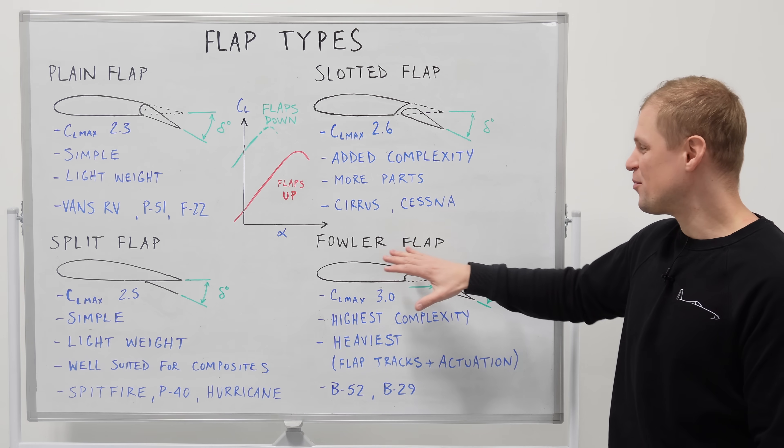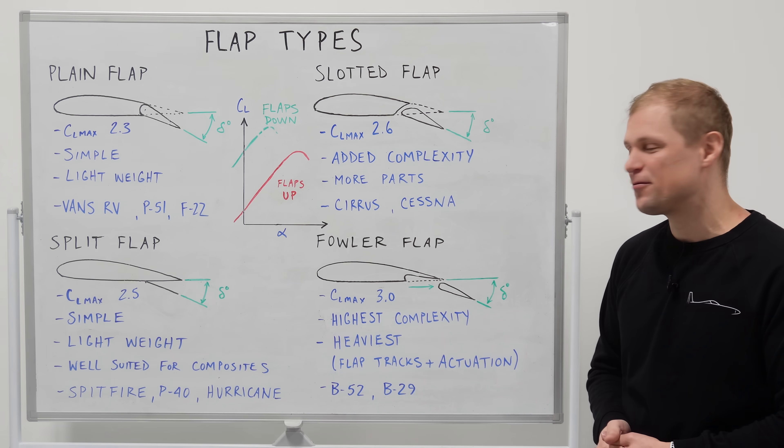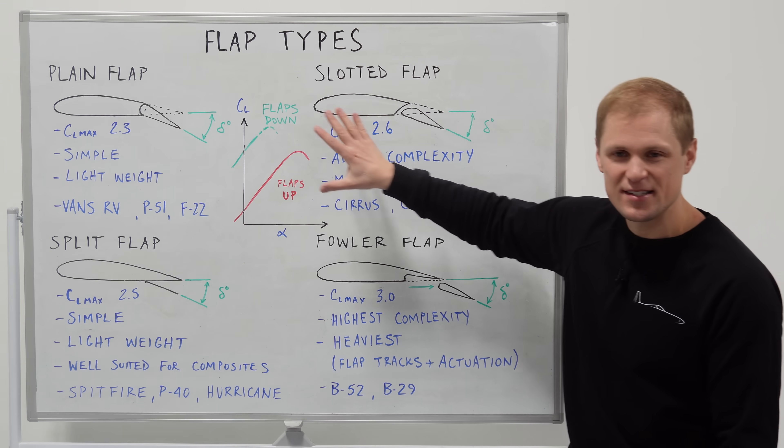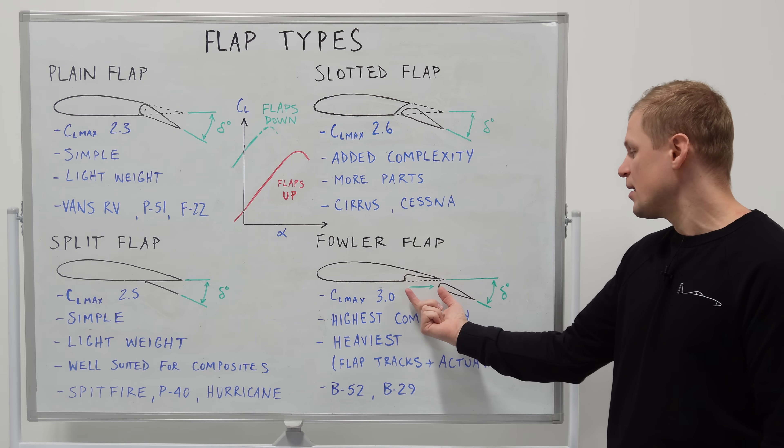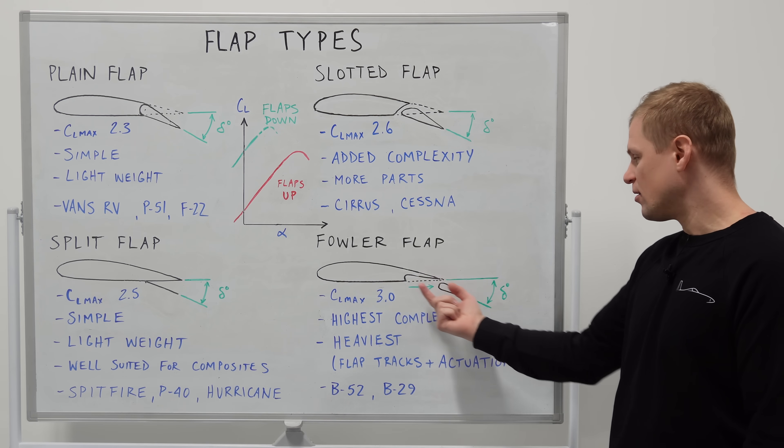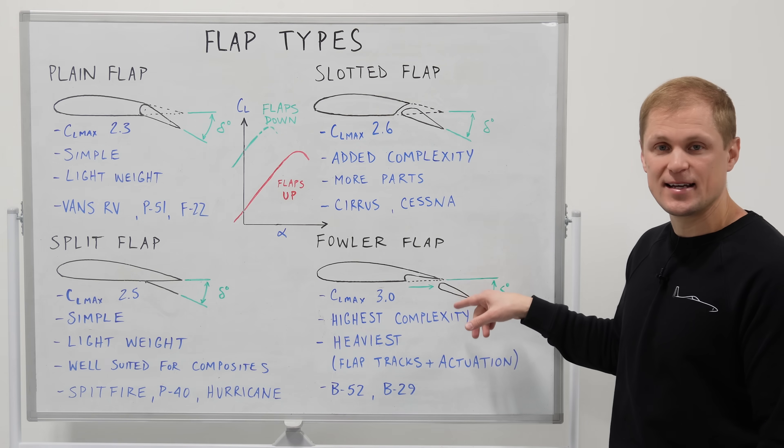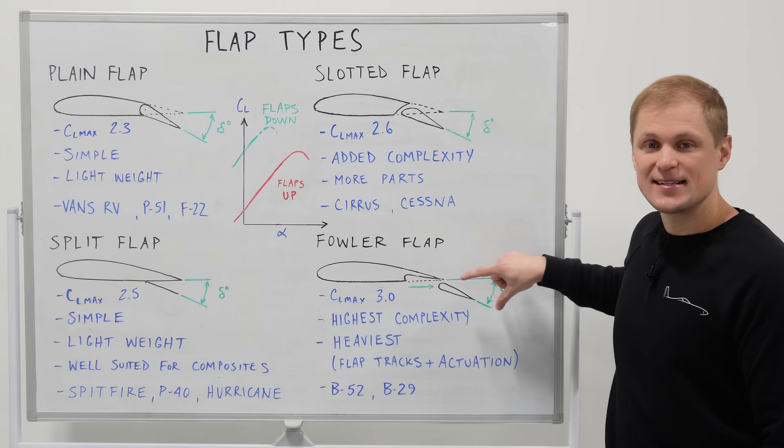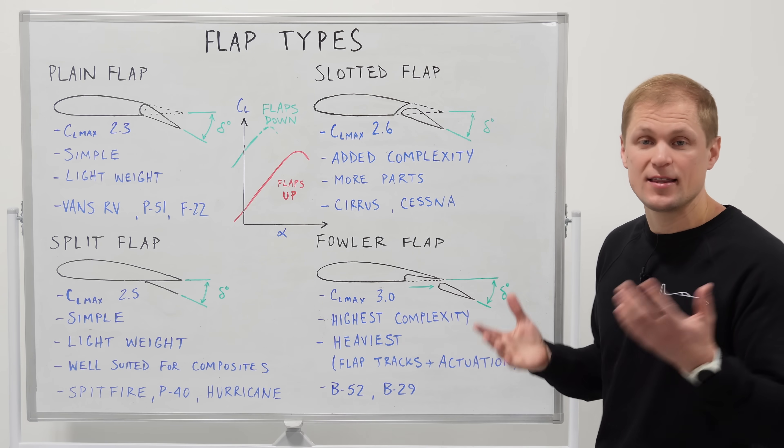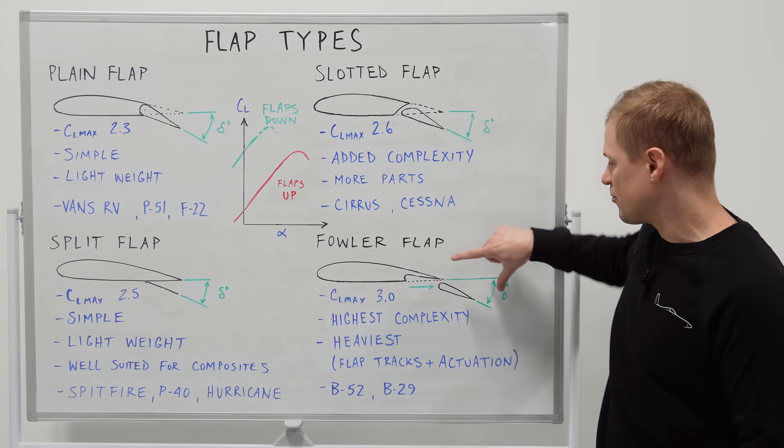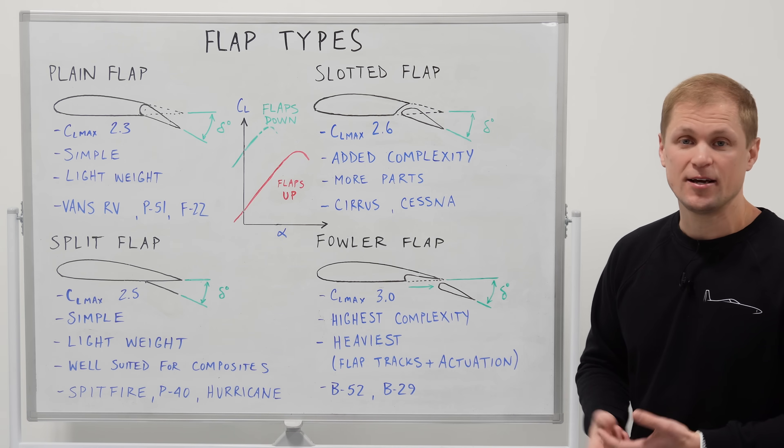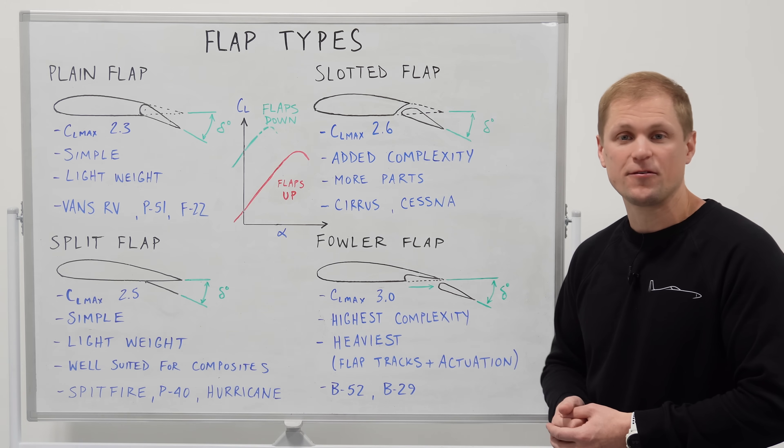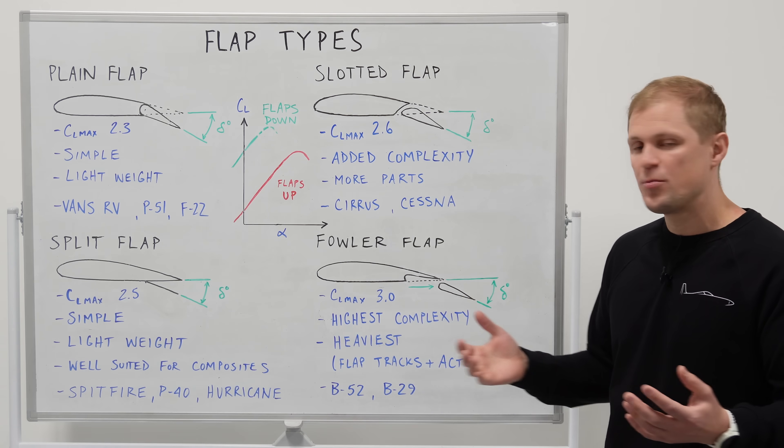If we really want to up our lift coefficient we might go to the Fowler flap which is sort of a mashup between some of these designs and the special thing about the Fowler flap is that the flap actually translates aft all the way to the trailing edge of the wing and then deflects down. So when the flap translates aft that increases the wing area that alone would increase lift but then we deflect the flap down as well that further increases lift and we might expect to see a maximum lift coefficient of something around 3.0.